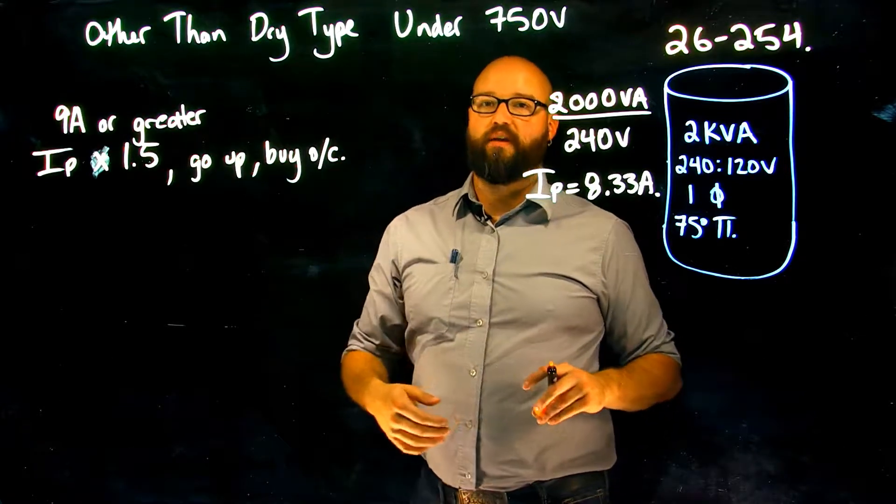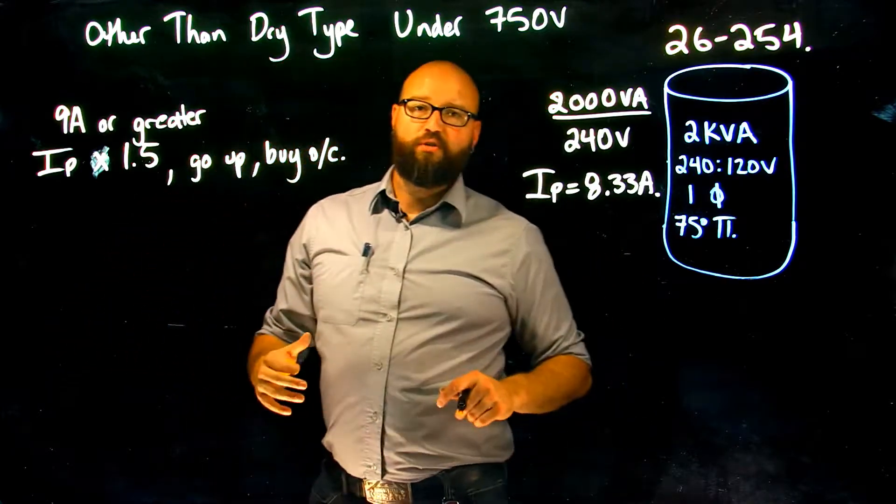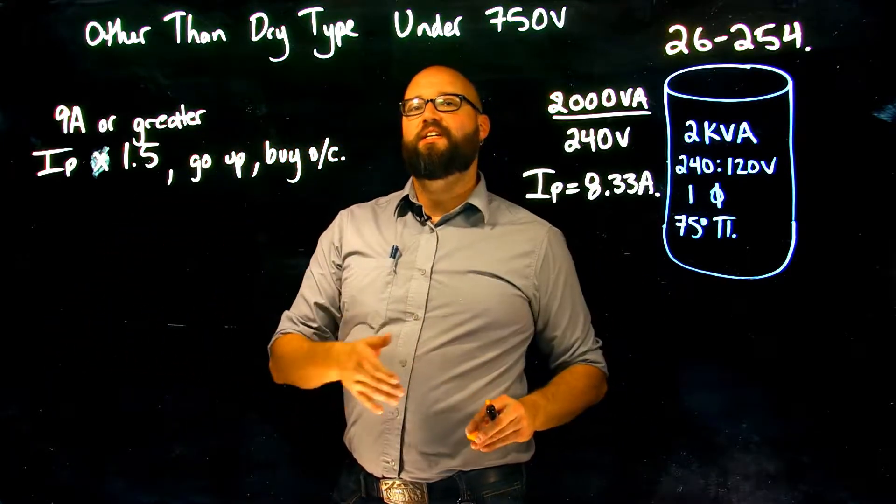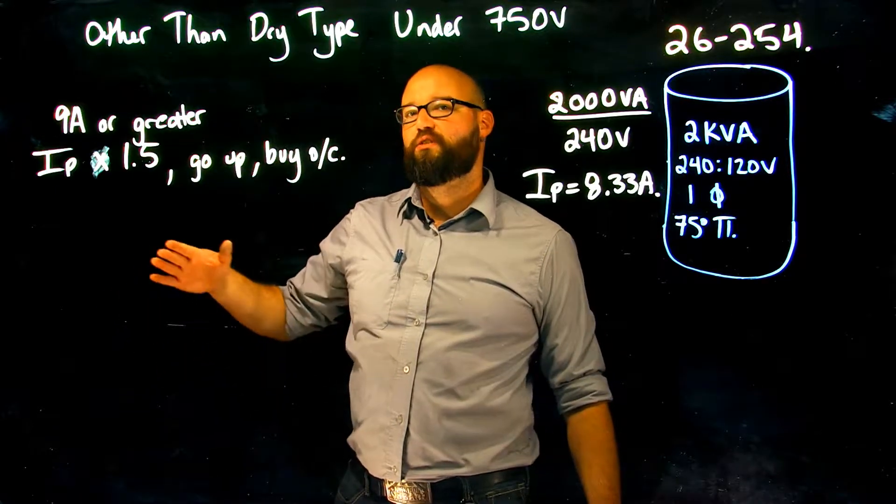So if this number was over 9 amps we would multiply it by 1.5, we would go up and choose the next available size overcurrent. Sub rule 2 item b tells me if it is less than 9 amps.